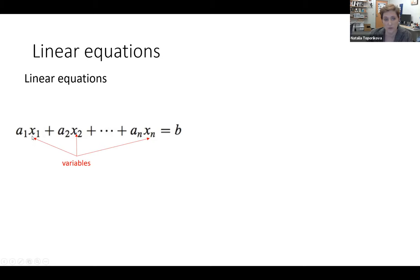Here the variables are x1, x2 to xn, and our constants or coefficients are a1 to an. Our coefficients a can be either real or complex numbers, and on the right hand side of this equation is another number which is called b, or the free parameter.